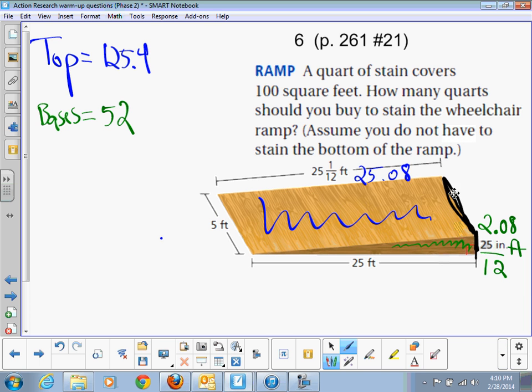So that's actually 5 feet by 2.08. So 5 times 2.08. And that gives us a side of 10.4 square feet.